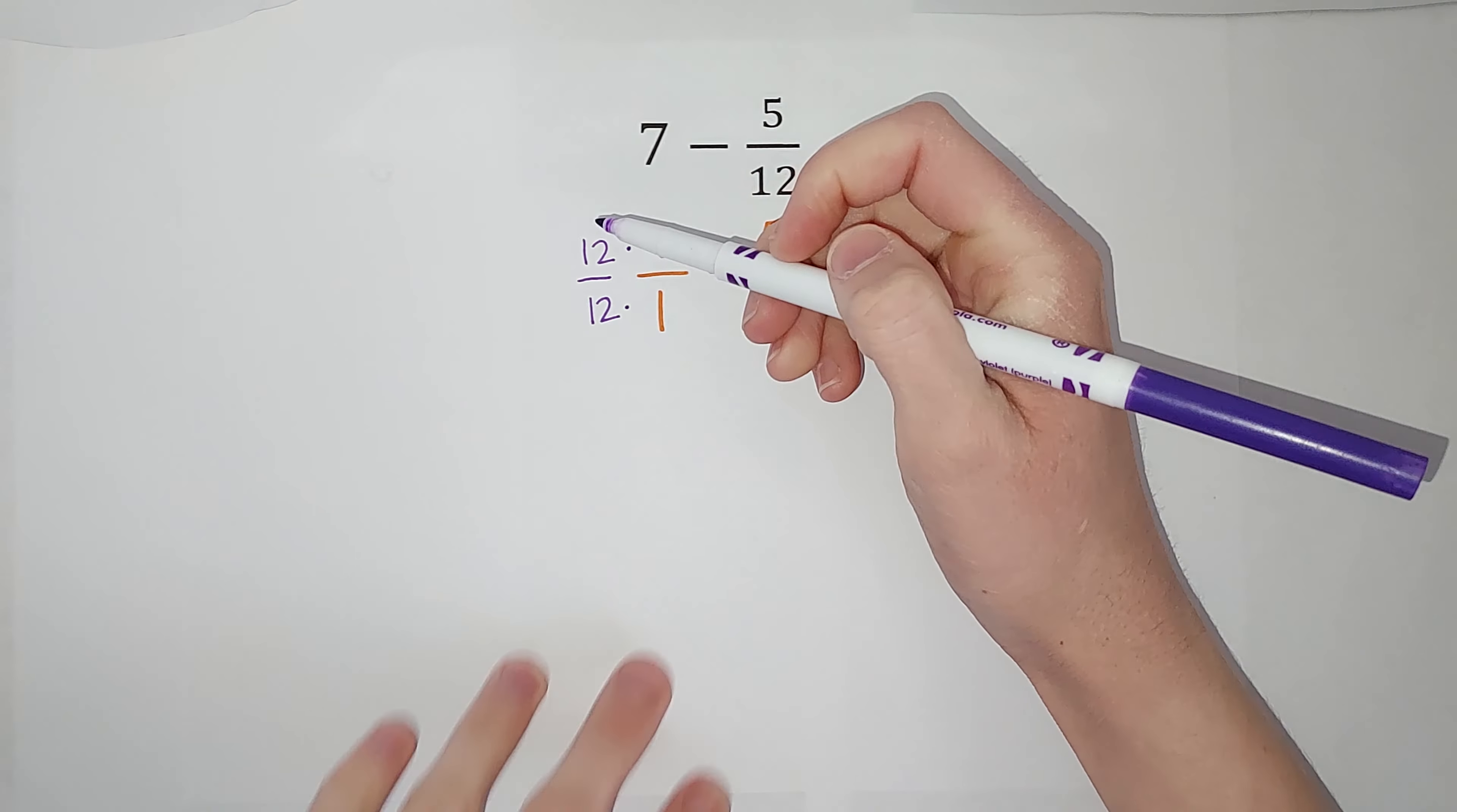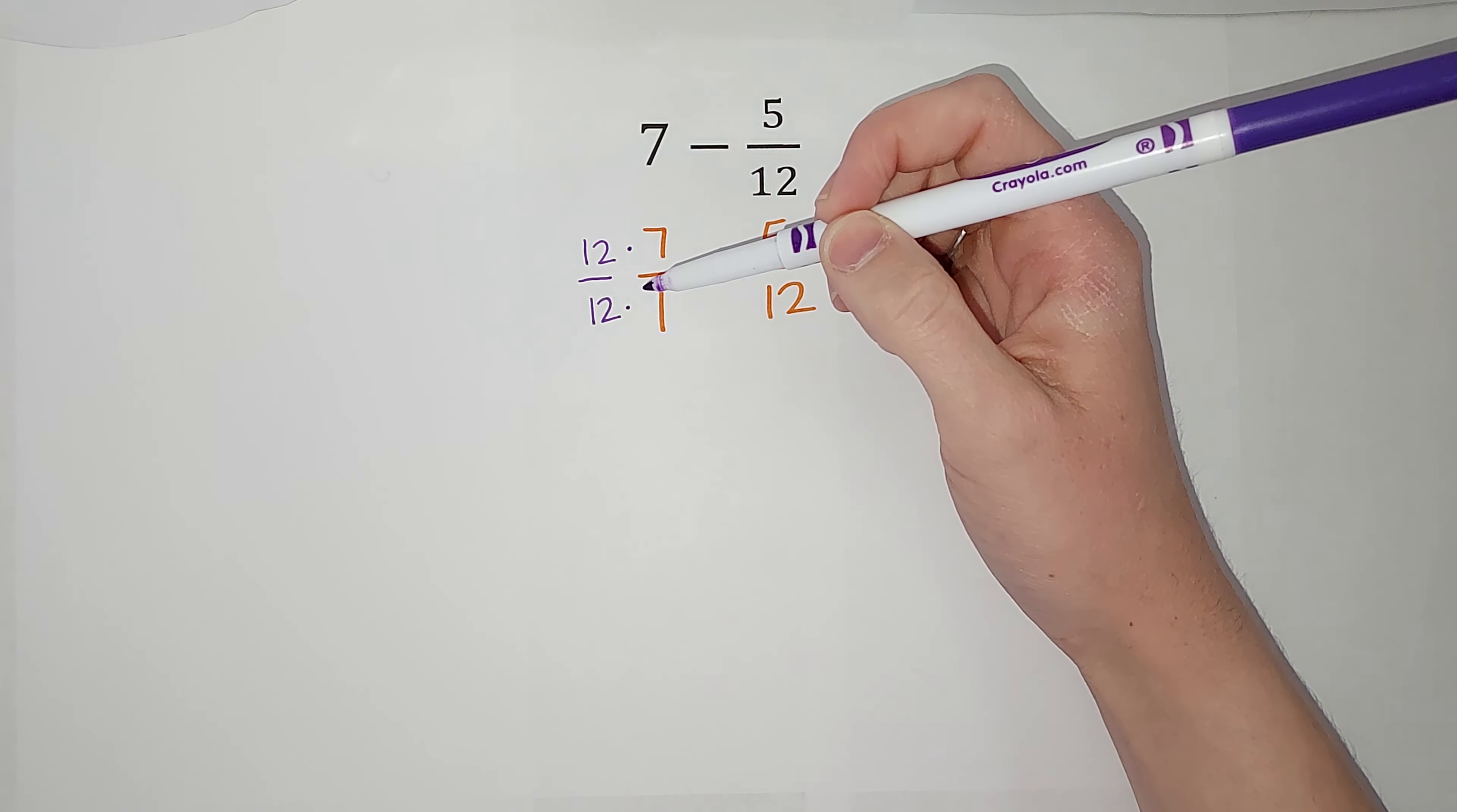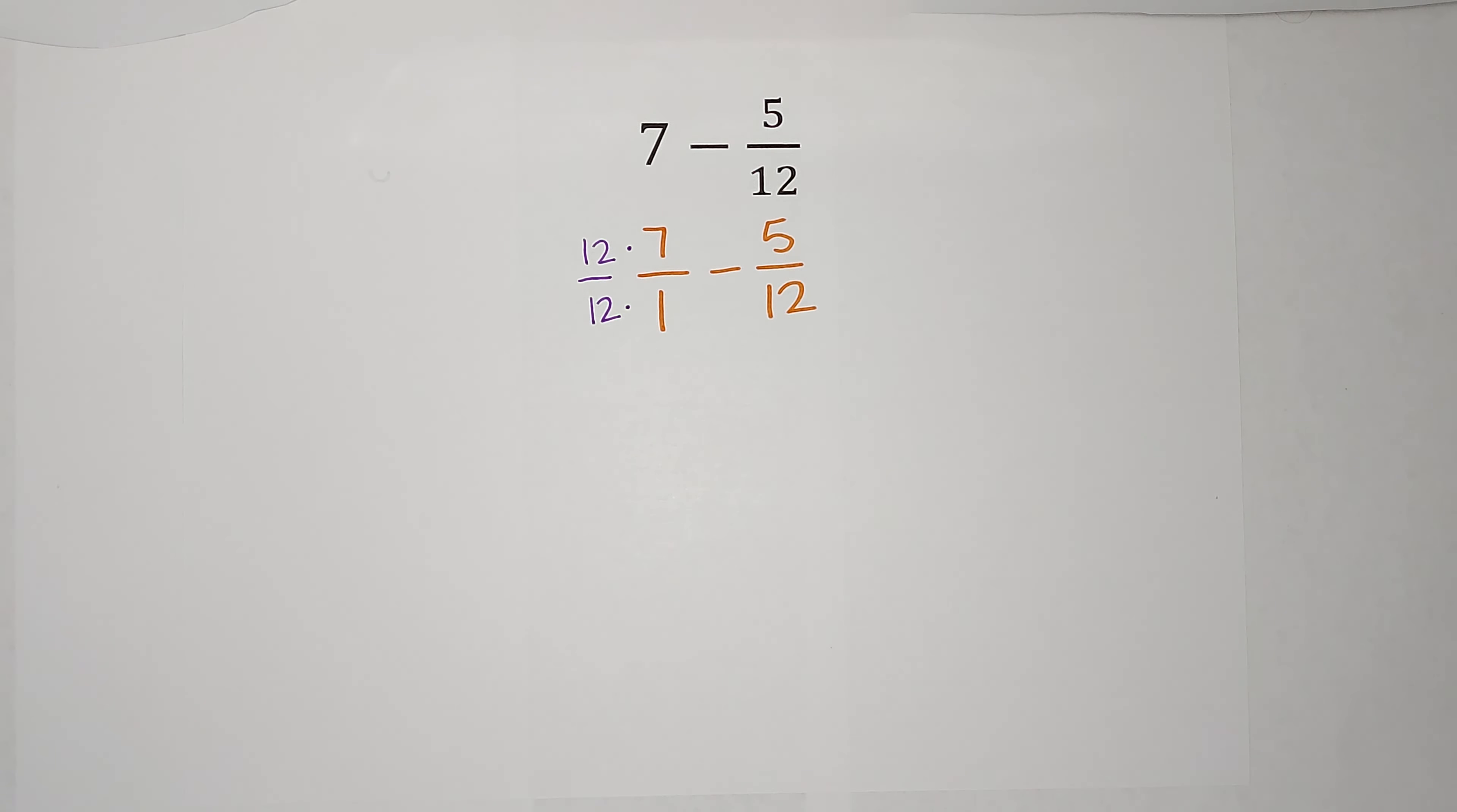Why? Because 12 over 12 simplifies down to 1. So I'm just multiplying this by 1. It's just a weird looking 1, right? So I'm changing what the fraction looks like. I'm not changing its actual value though.